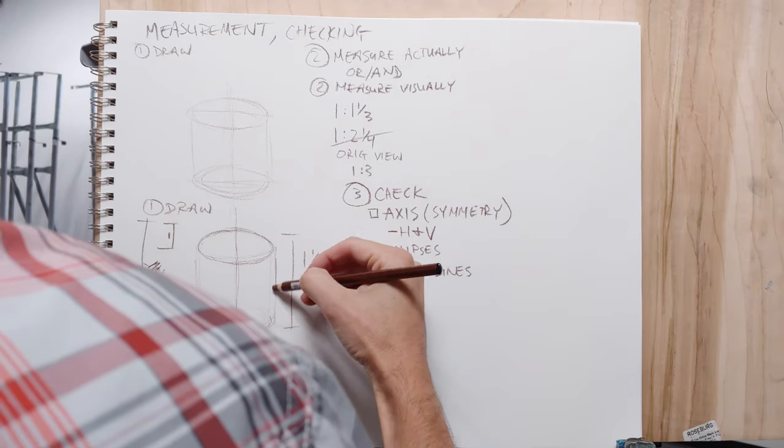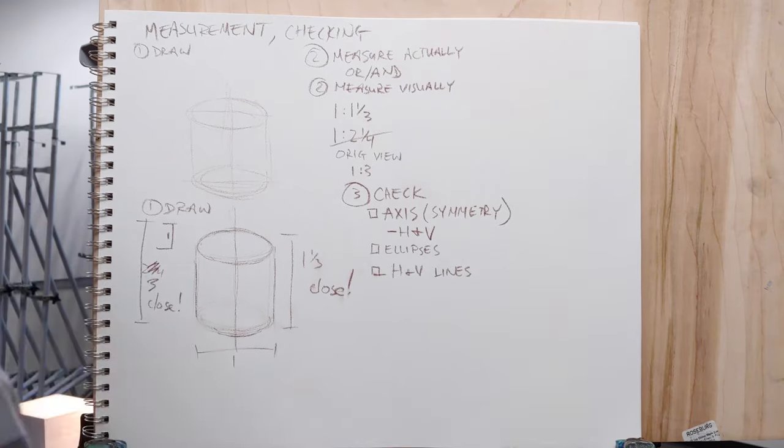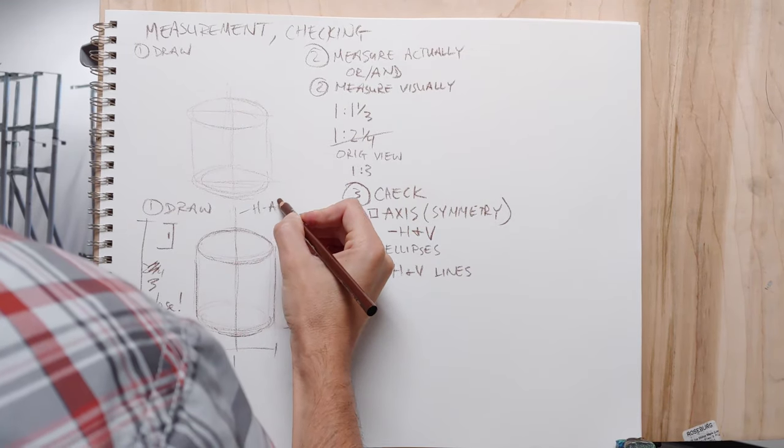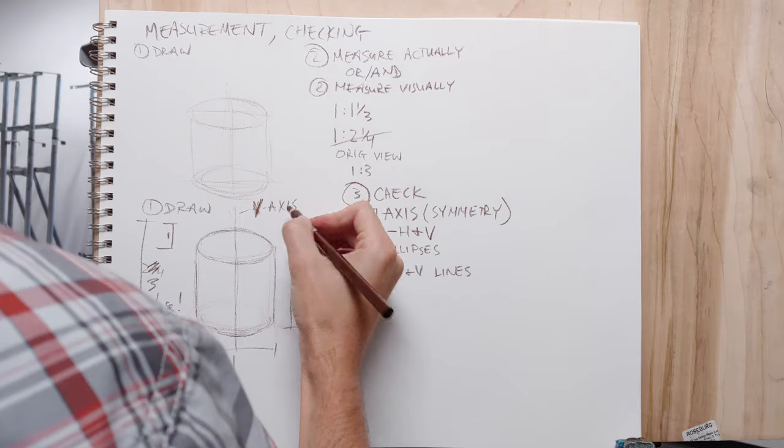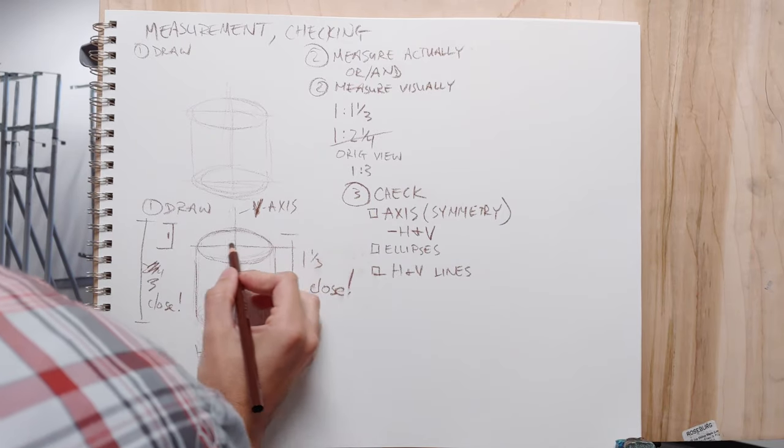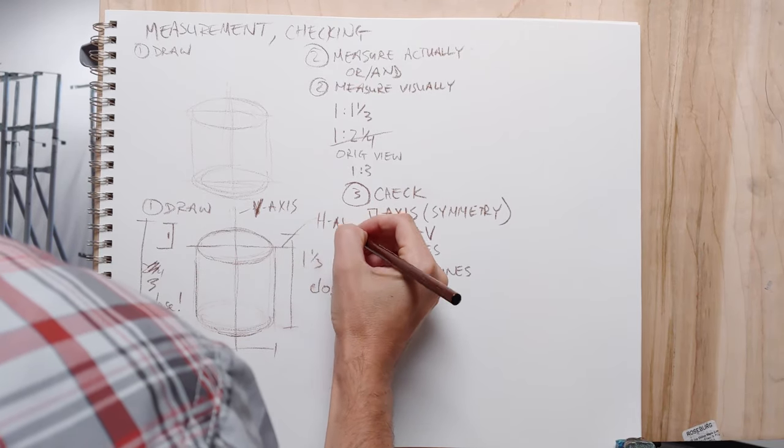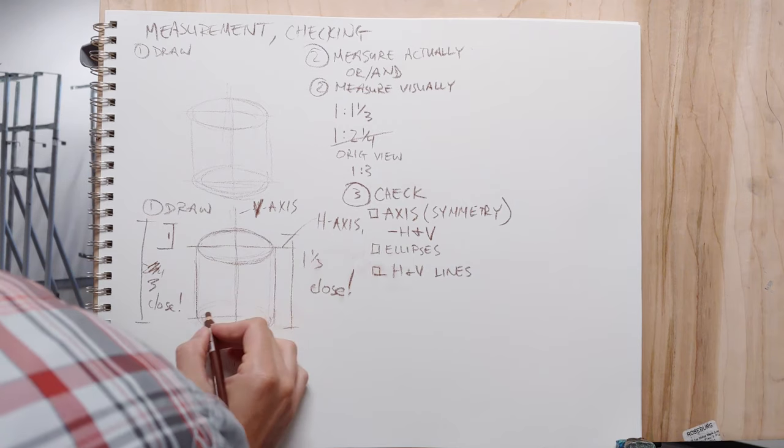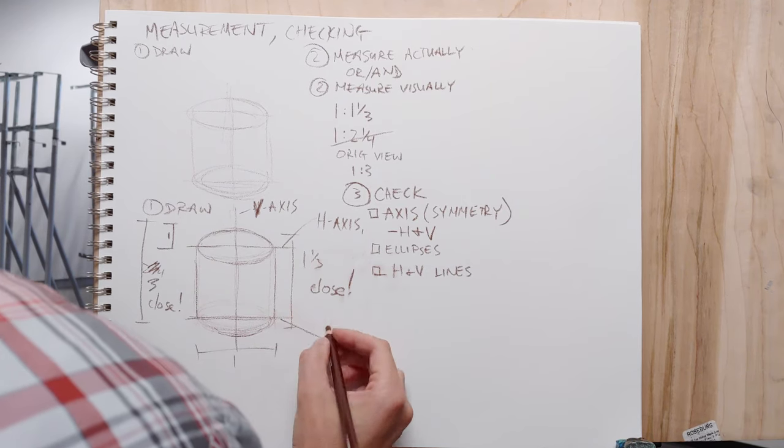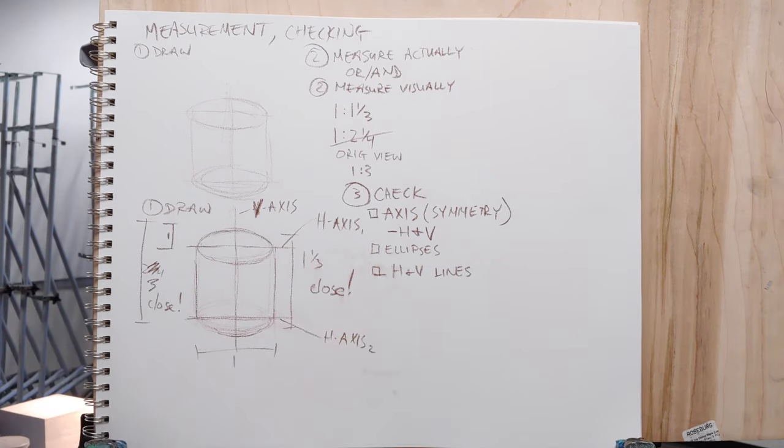Once you measure it, there's some self-checking guidelines you can do. With cylinders, it's pretty simple. The same thing goes for any sort of cylindrical object, cone, sphere, whatever. You can check vertical and horizontal axes, and that's one of the first things that you want to do. That defines your symmetry.